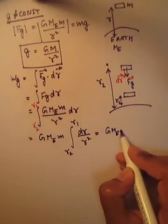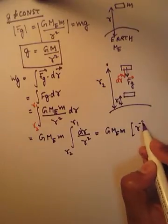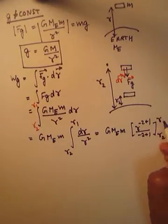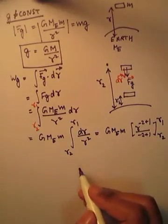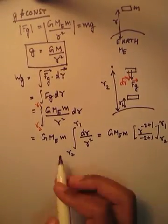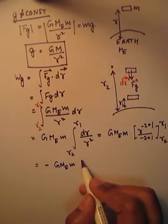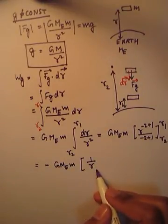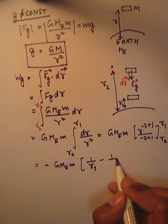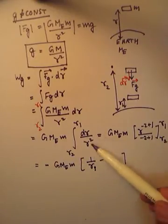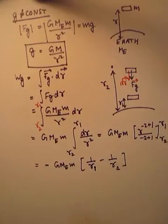This integration of dr/r² gives r^(−2+1)/(−2+1), evaluated from r2 to r1. This gives a negative sign, and we get G·Me·m times (1/r1 minus 1/r2), because we are integrating from r2 to r1. So this will be the work done by the gravitational force.